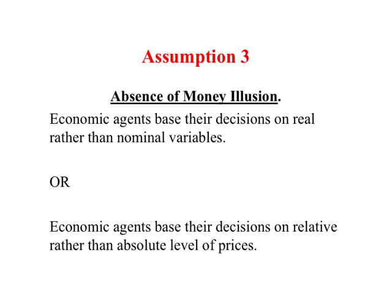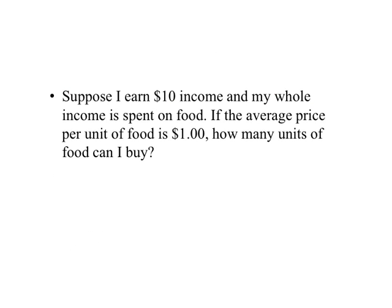The third assumption about economic agents' behavior is the absence of money illusion. By this we mean economic agents — consumers and producers — base their decisions on real rather than nominal variables. Another way to look at it is that economic agents base their decisions on the relative rather than the absolute level of prices. This requires some explanation, so let's look at some examples.